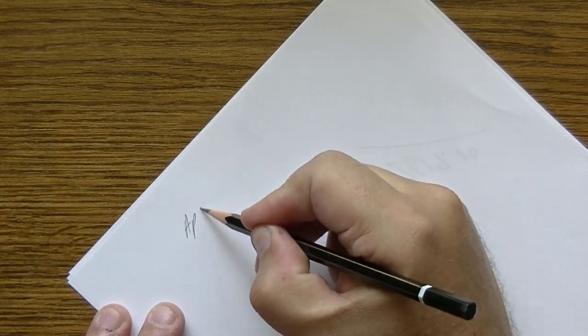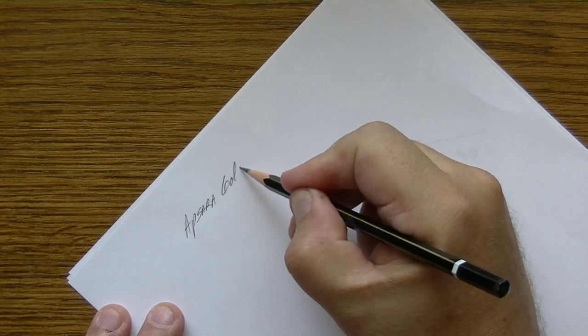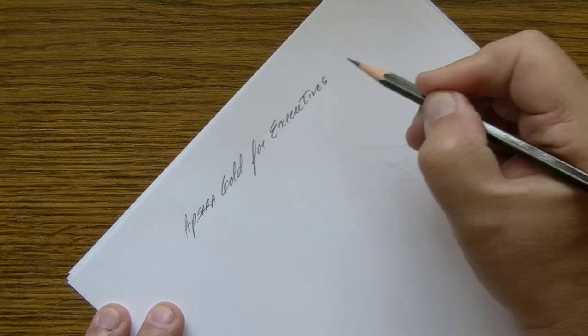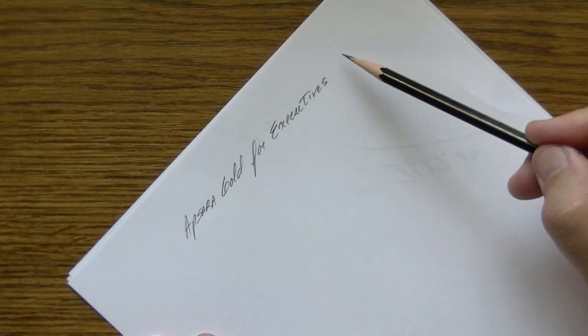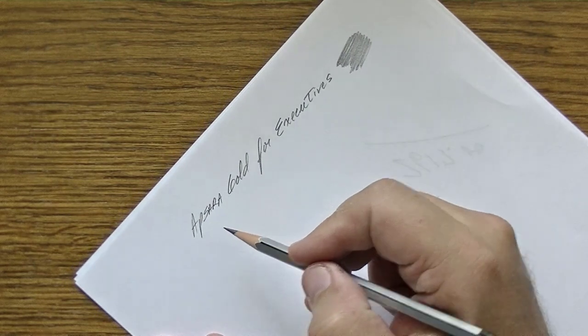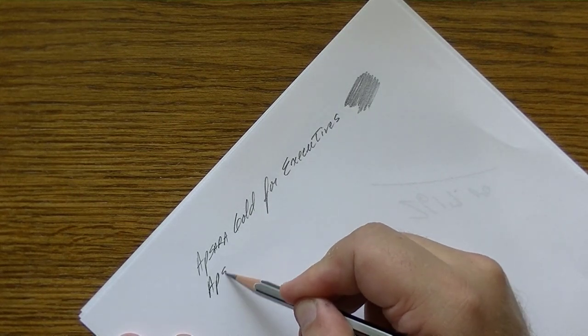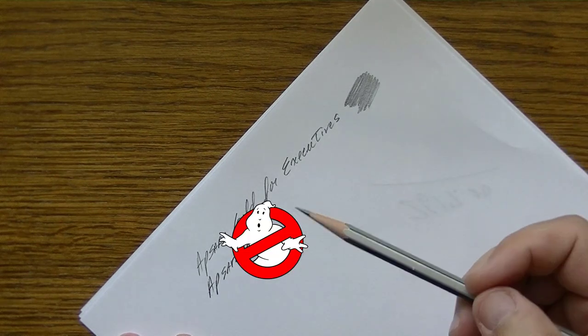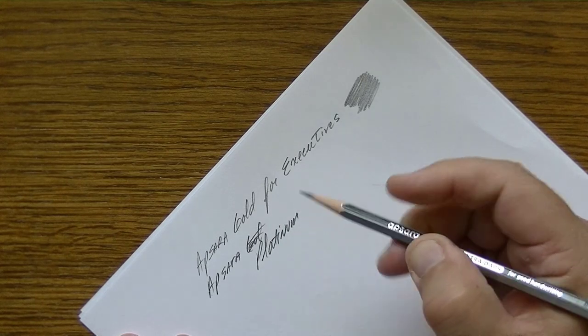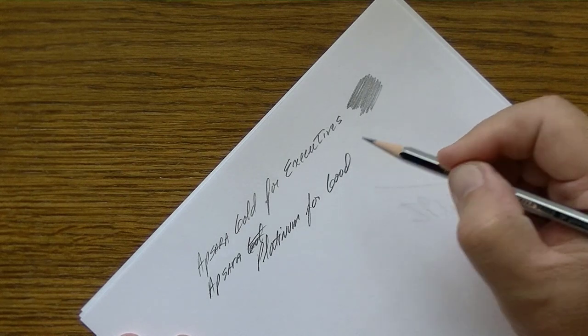So I'm going to go ahead and scan in and we're going to start off with the gold. Let me just back off just a little bit there so you can see that. Okay so this is the Apsara gold for the executives. And this one here is the Apsara, gold again that doesn't work, the Apsara platinum for good handwriting.